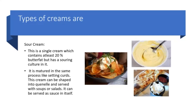Sour cream is another type of cream which is a single cream with at least 20% of butter fat, but it has a souring culture in it. Sour cream is matured in the same process like the setting of curds. This cream can be shaped into a quenelle and served with soups or salads. Sour cream can also be served as a sauce or dip in itself. As shown in the picture, it can be mixed with mustard and served as a dip.